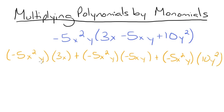Now we need to multiply each set of the monomials. Remember, a negative times a negative is a positive. So we'll have negative 5x squared y times 3x is negative 15. x squared times x is x cubed. And then y.